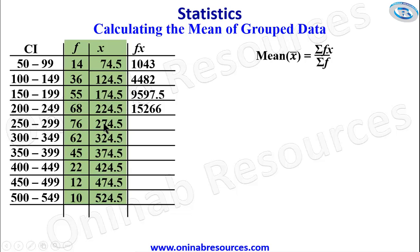76 times 274.5 gives 20862, 62 times 324.5 gives 20119, 45 times 374.5 gives 16852.5, 22 times 424.5 gives 9339, 12 times 474.5 gives 5694, and 10 times 524.5 gives 5245.